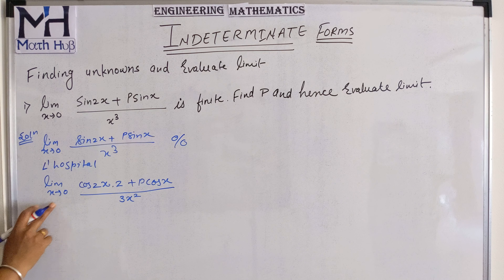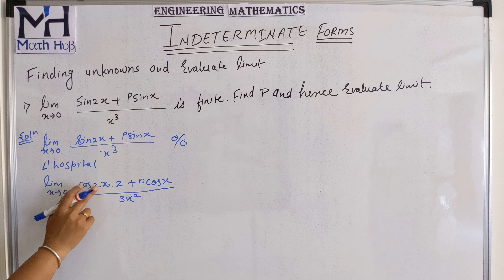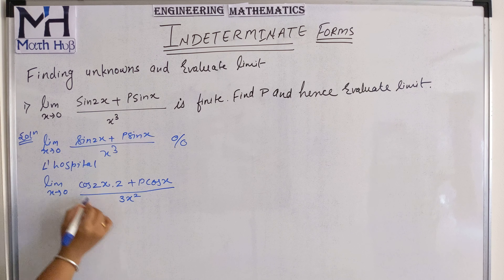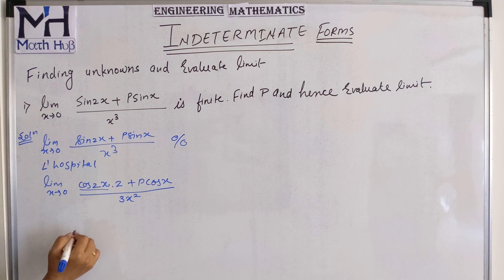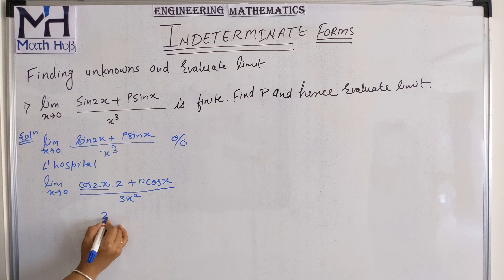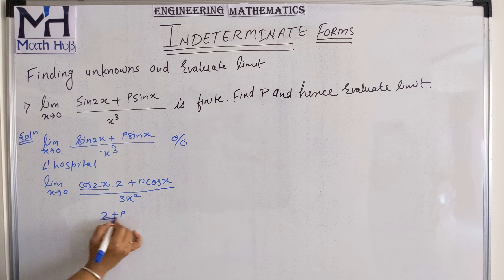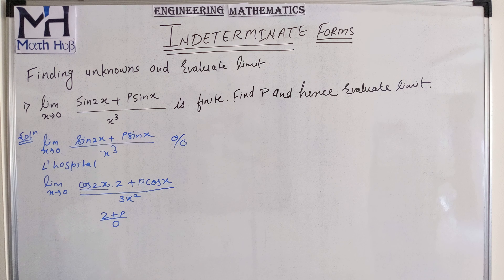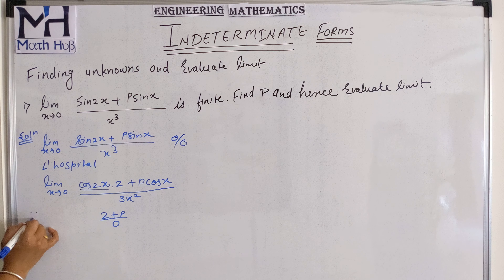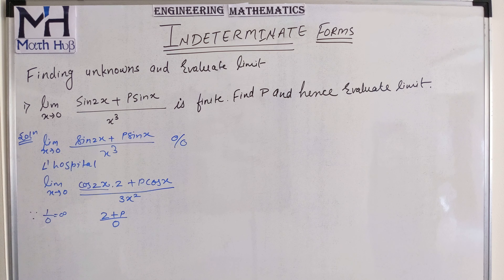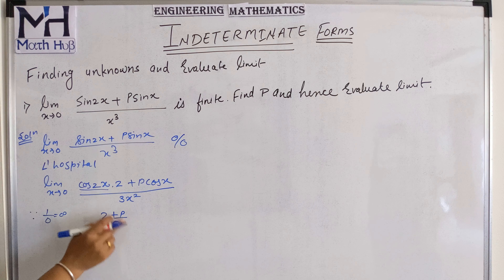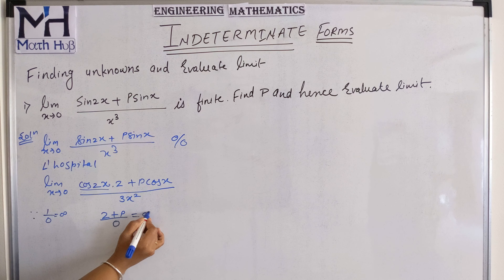Again put the limit. cos(0) = 1, so cos 2x gives 1, giving us 2. Here cos(0) = 1, so we get p. And from the denominator we get 0. So we have something by 0, and we know that any number divided by 0 gives infinite. So the result we are getting here is infinite.